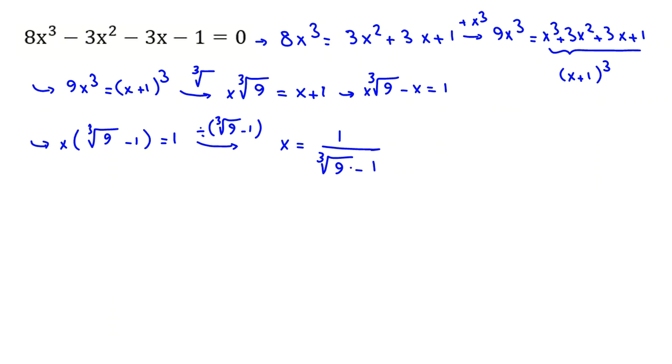Now we should rationalize, which means getting rid of the root in the denominator. When we have a cube root in the denominator and we want to rationalize it, the idea is using this identity.